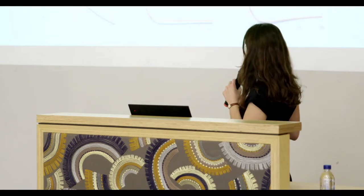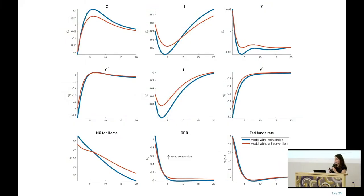I focus on a one-time shock to U.S. monetary policy — specifically monetary tightening, which is more relevant to today's world — and compare a model with and without sterilized FXI. I show a 1% annualized increase in the federal funds rate. The orange line is the model without intervention and the blue line is the model with intervention.